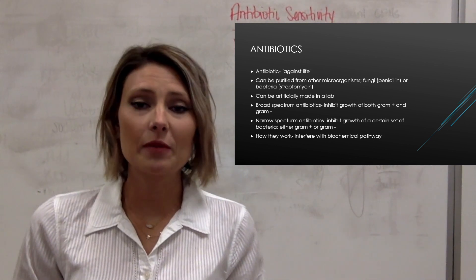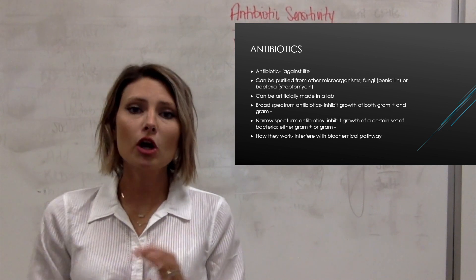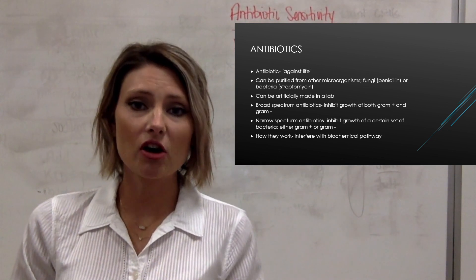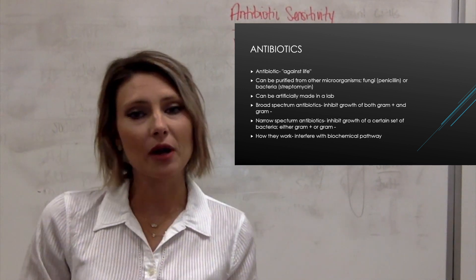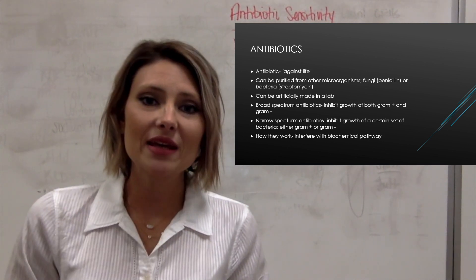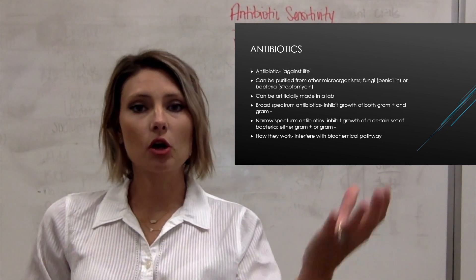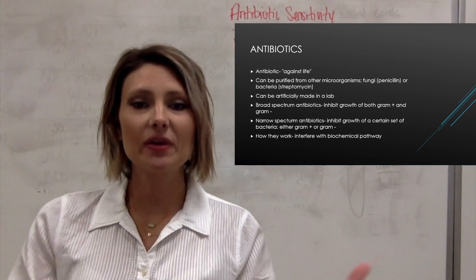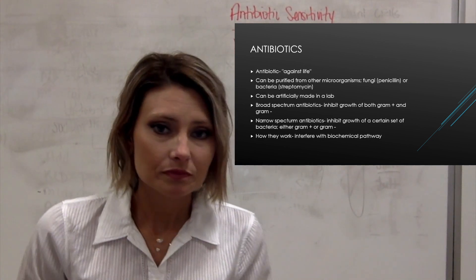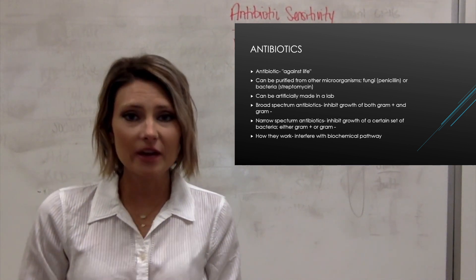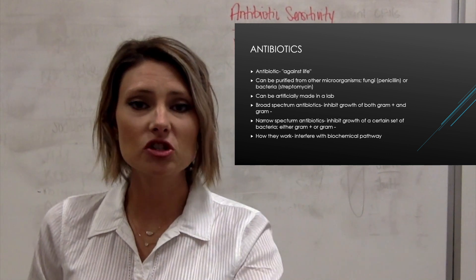There are other antibiotics that are made by bacteria as well. There are a couple different ways to get antibiotics: the first way is to purify them from other microorganisms, and the other way is to make them artificially in the lab. There are also a couple different kinds of antibiotics — broad spectrum antibiotics and narrow spectrum antibiotics.